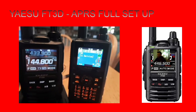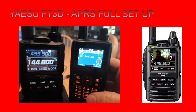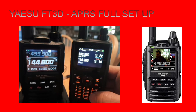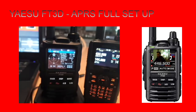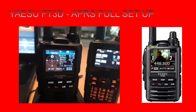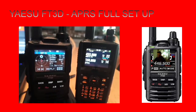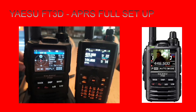Now let's try it the other way around. On the Kenwood TH-D74 you just push the 6 for manual, and there you go - there's the APRS received on the FT3D.